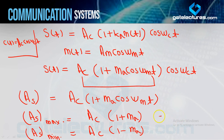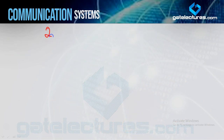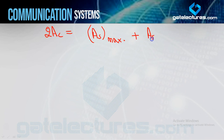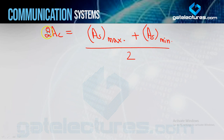Using equations A and B: adding them gives 2AC = AS_max + AS_min, so AC = (AS_max + AS_min)/2. This directly gives AC from the modulated signal's maximum and minimum amplitudes. Subtracting equation B from A gives 2AC mA = AS_max − AS_min.